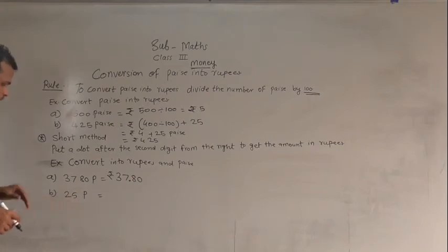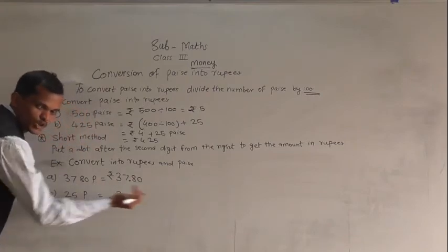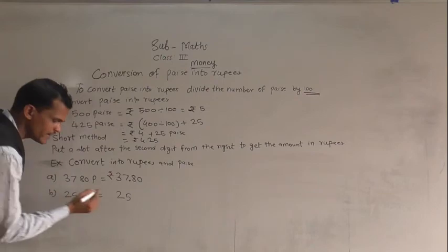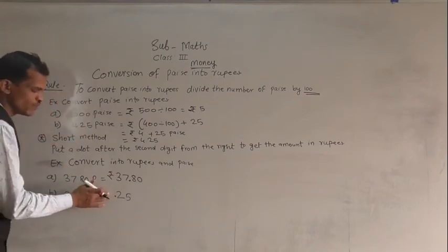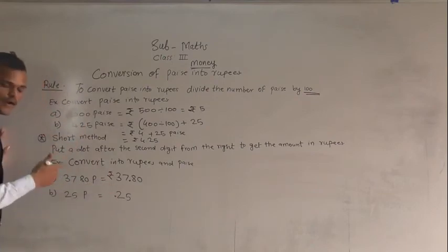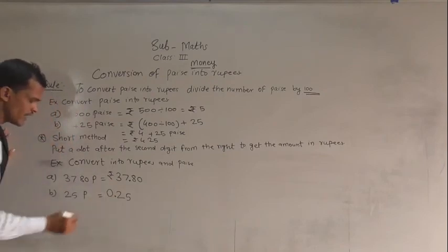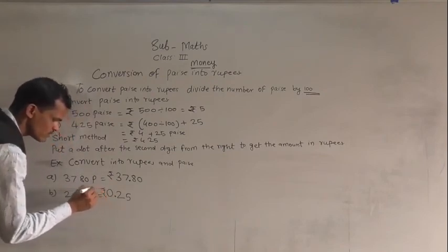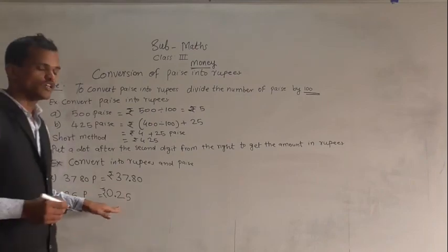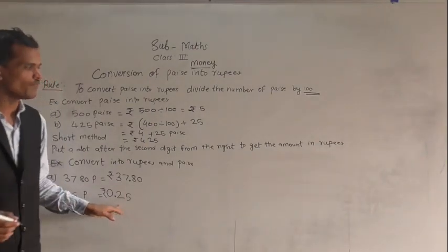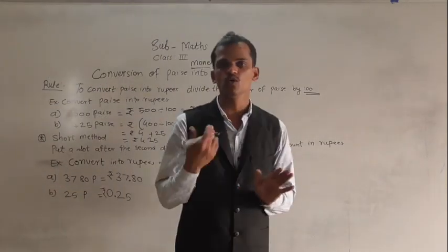Then, 25 paise is equal to — give a point after 2 digits from the right. There is no digit before the point, so write 0 there, and write the rupees sign. So 25 paise is equal to rupees 0.25. Like this, you have to convert paise into rupees.